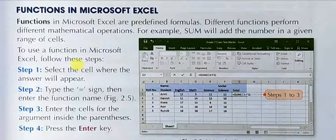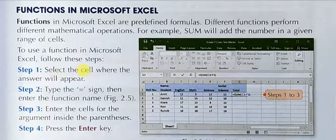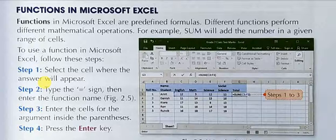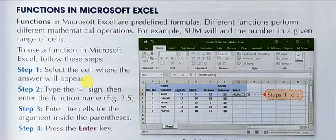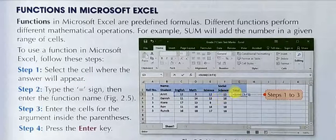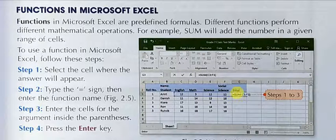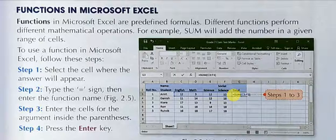To use a function in Microsoft Excel, follow these steps. Step 1: Select the cell where the answer will appear. First, you have to go to the cell where you want the answer, like here, the sum. Click here.